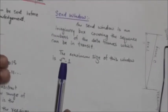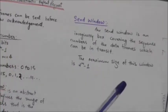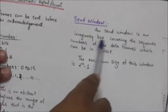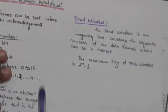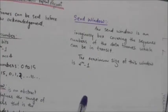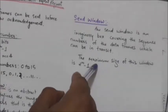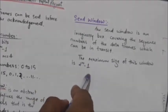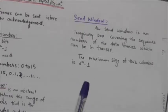First we will study about the send window. The send window is an imaginary box covering the sequence numbers of the data frames which can be in transit — in other words, sequence numbers of the data frames that can be transmitted before requiring an acknowledgement. The maximum size of this window is 2 raised to power m minus 1, where m is the number of bits allowed in a header of the frame for sequence numbers.